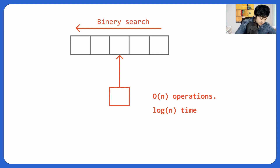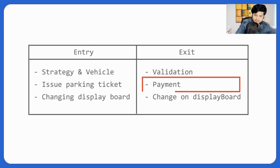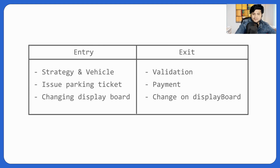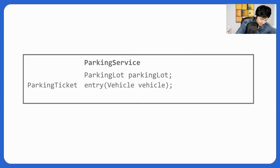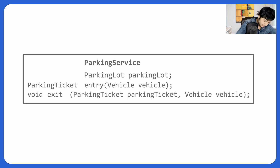For exit: validation is done, payment can be handled by the payment service, and putting the spot back at the right place in the list is also done. We then call update on the display service. The exit method takes a parking ticket and a vehicle as parameters, and returns void.